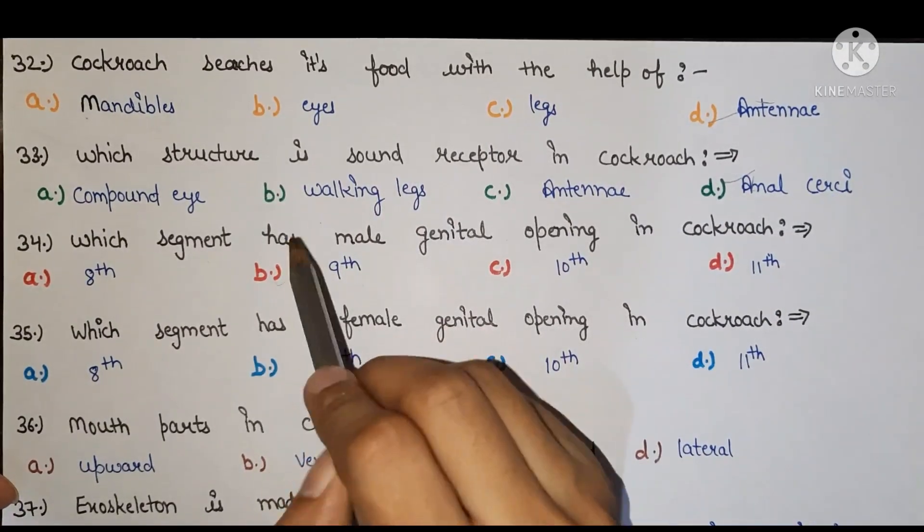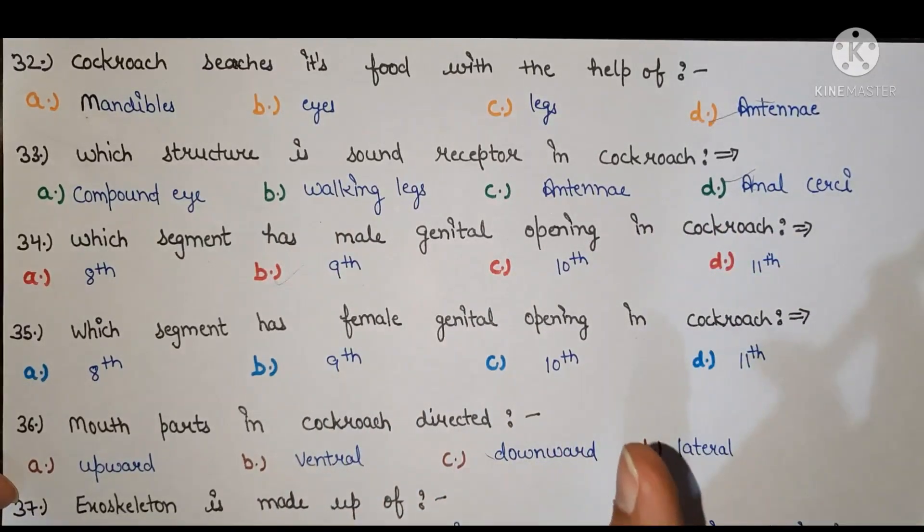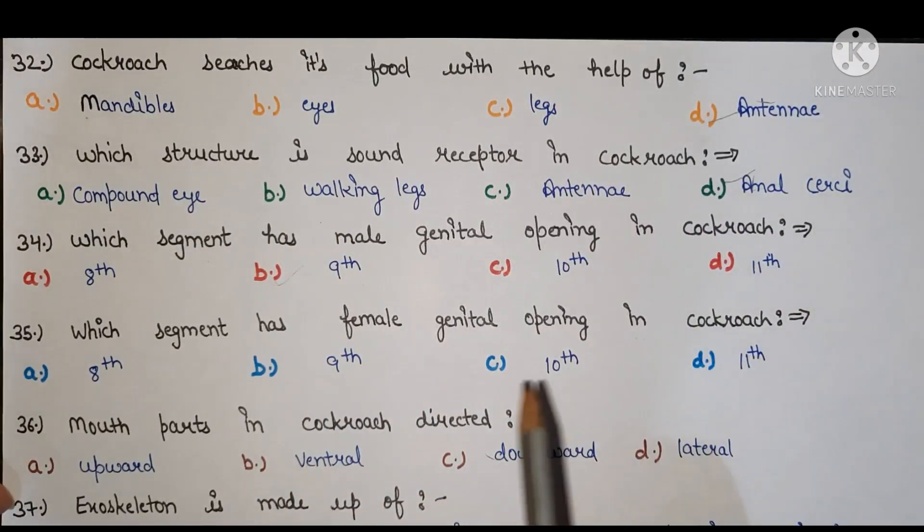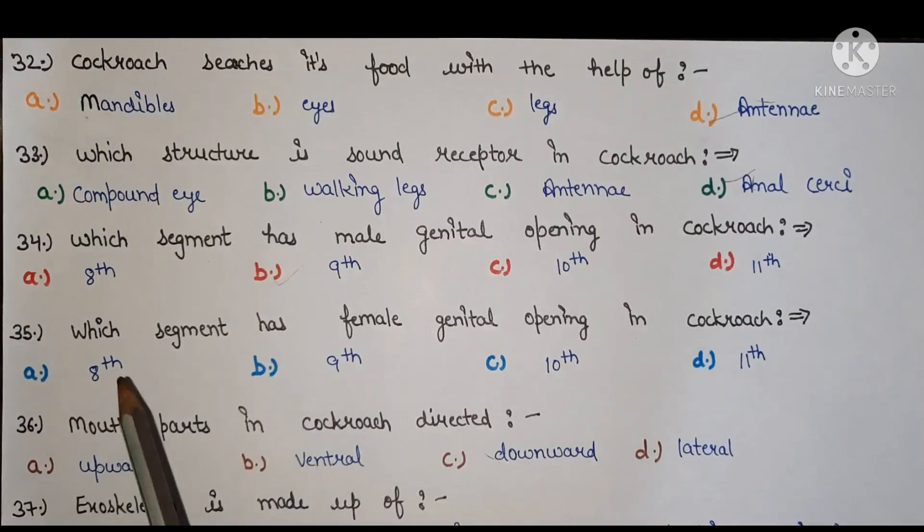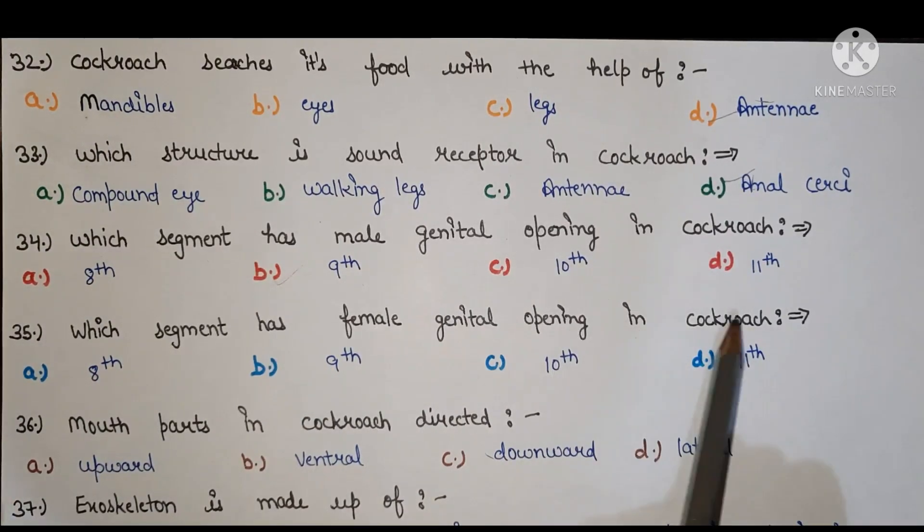Next, which segment has female genital opening in cockroach? A 8th, B 9th, C 10th, D 11th. Right answer is eighth.